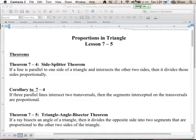First one is called the side splitter theorem, and it says if a line is parallel to one side of a triangle and intersects the other two sides, then it divides those sides proportionally.